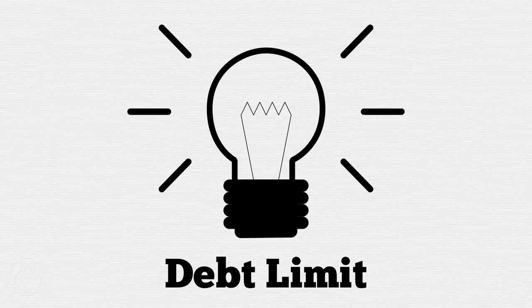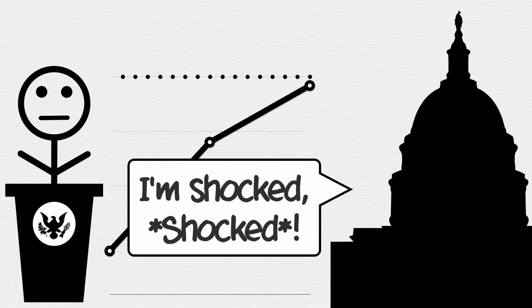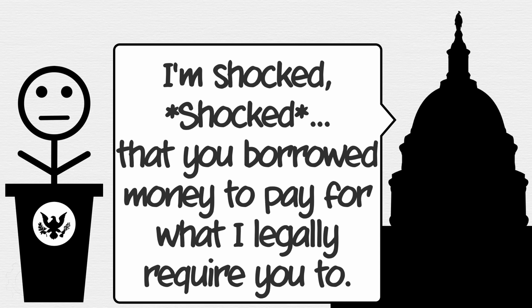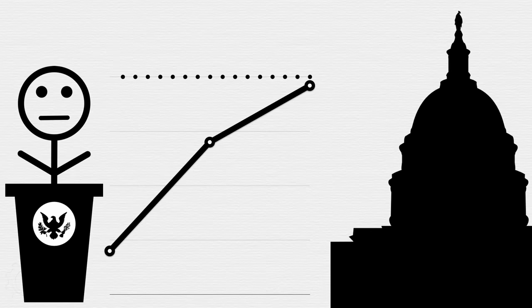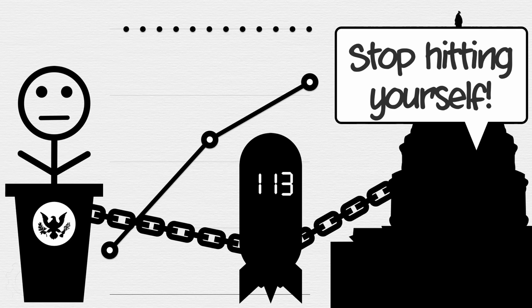A debt limit sounds like a good idea until you see the real-world consequences of these two branches of government interacting. As the total amount borrowed gets closer to the limit, Congress usually points to the President and acts shocked — shocked that his reckless spending has brought us so close to the debt limit that they, reasonable, prudent Congress, have set. And while it's technically correct that the President has borrowed this money, Congress has forced him to do it by approving a budget that the President is legally obligated to spend, without also approving the necessary taxes to cover that spending. So the debt limit fight is essentially the government version of the playground favorite "Stop Hitting Yourself," except with added terror for everyone watching.